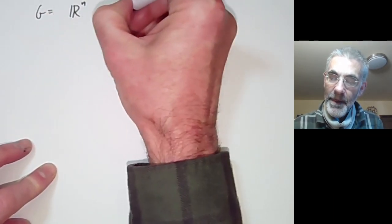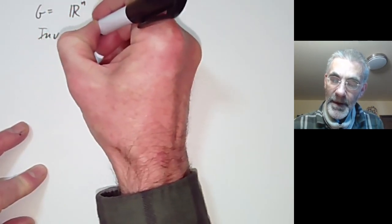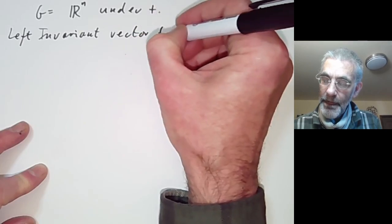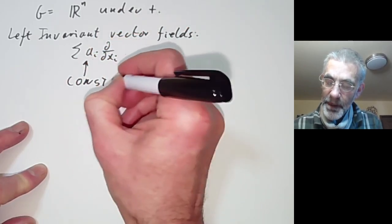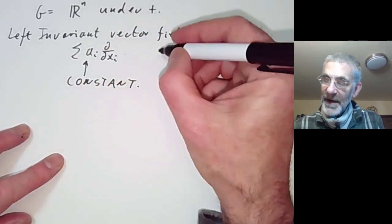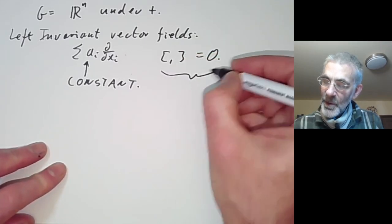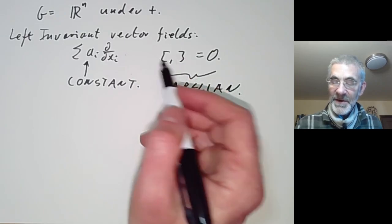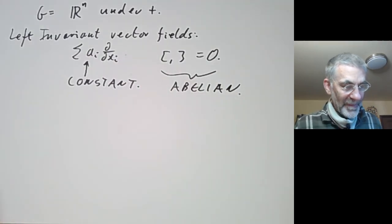We can compute this in one trivial case. Suppose we take the group to be just a vector space under addition. Then G is acting on itself by translation, so left-invariant and right-invariant are the same. The invariant vector fields look like a sum of a_i·(∂/∂x_i) where the a_i are constants. The Lie bracket of any of these is always zero. So the Lie algebra is abelian or commutative. Abelian Lie algebras are not terribly exciting — they're really just the same as vector spaces with the Lie bracket always zero. We'd like a more interesting case where the Lie bracket isn't zero.